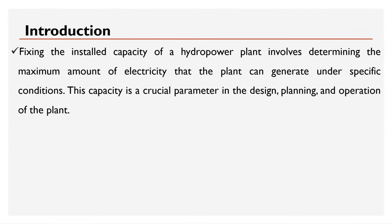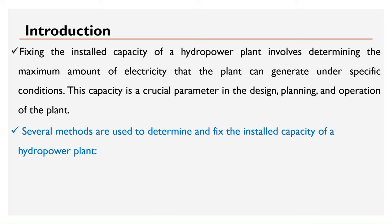Fixing the installed capacity of a hydropower plant involves determining the maximum amount of electricity that the plant can generate under specific conditions. This capacity is a crucial parameter in the design, planning, and operation of the plant. Several methods are used to determine and fix the installed capacity of a hydropower plant.